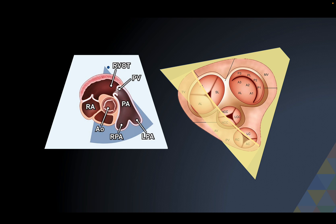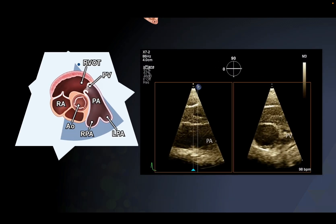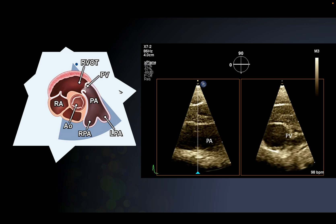This is the plane where you are working - you see the tricuspid valve, the aorta, and the pulmonary artery. The plane actually transects between the left coronary cusp, the left pulmonary valve cusp, and the anterior pulmonary valve cusp. So this is what we can see, but can we see the pulmonary valve in cross-section? That's what I'm going to tell you today.